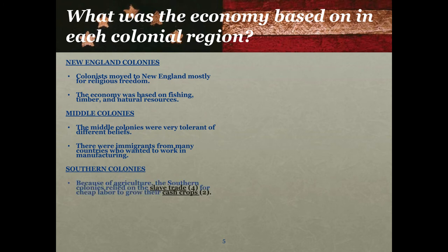The southern colonies were very agricultural. It was a warmer area with a longer growing season, and because of that agriculture, the southern colonies relied on the slave trade for cheap labor in order to grow their cash crops. Pretty much the south is where tobacco was grown, and they wanted to sell that tobacco as inexpensively as possible. By having slaves, they didn't have to pay their labor and therefore could sell their crops for less money — that's just the brutal reality of it. Agriculture is a very labor-intensive economic activity, and the less you spend on labor, the more profit you make from your crop.